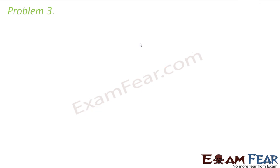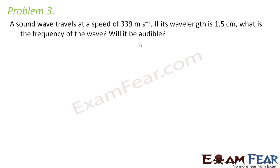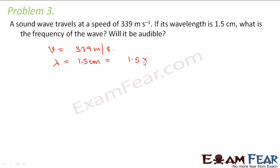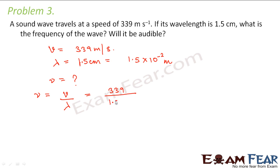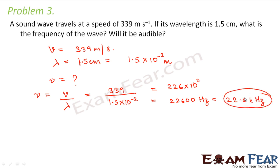Now let us look at the last problem of this lesson. A sound wave travels at a speed of 339 meters per second. If the wavelength is 1.5 centimeters, which is 1.5 × 10⁻² meters, what is the frequency of the wave? We know that frequency = speed of wave / wavelength = 339 / (1.5 × 10⁻²) = 226 × 10² = 22600 hertz, or 22.6 kilohertz. So this is the frequency of the sound wave.